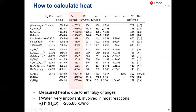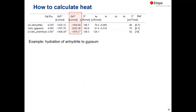Now the last exercise: saturation indices. From pore solution of hydrated Portland cement — high potassium, some sodium, high sulfate, and high calcium — we can calculate saturation indices. If we plot saturation indices as a function of time: portlandite is always positive (oversaturated), gypsum positive early then negative, ettringite always oversaturated, monosulfate near saturation.